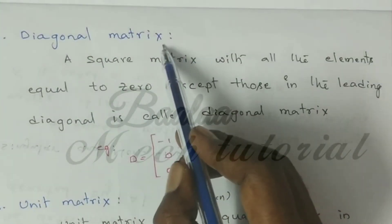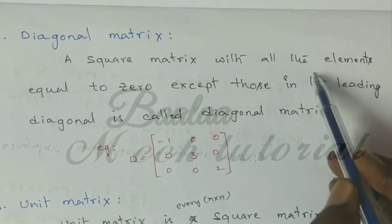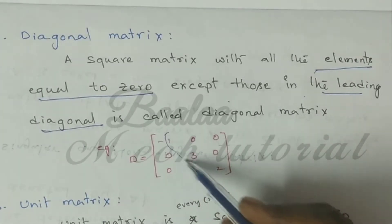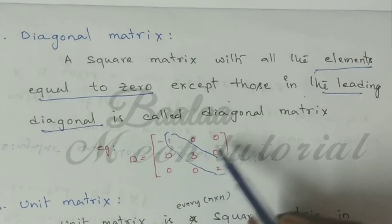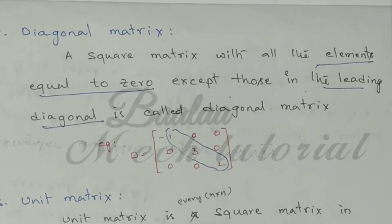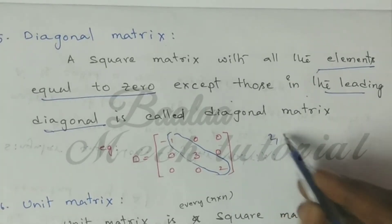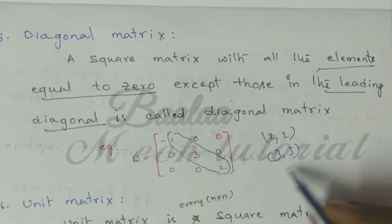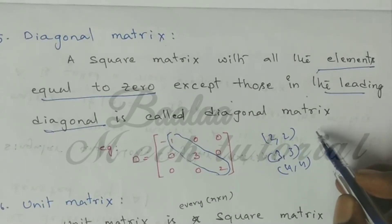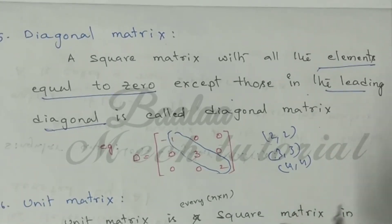Next is diagonal matrix. A diagonal matrix is a square matrix with all elements equal to zero except those in the leading diagonal. It can be a 2 by 2, 3 by 3, or 4 by 4 matrix. Since it is a square matrix, m equals n.